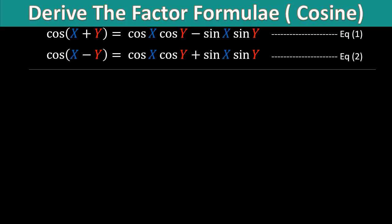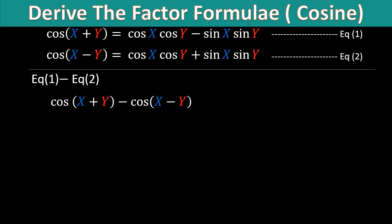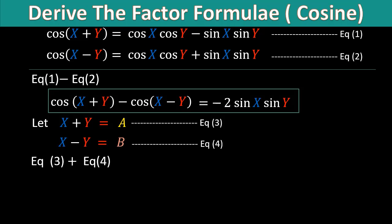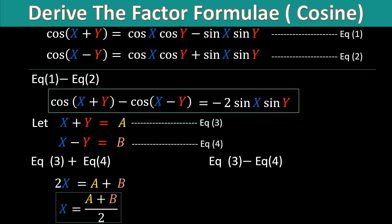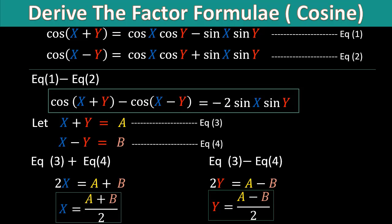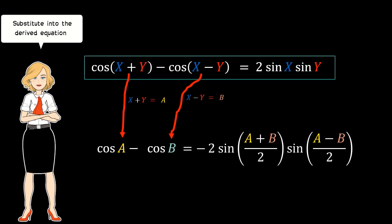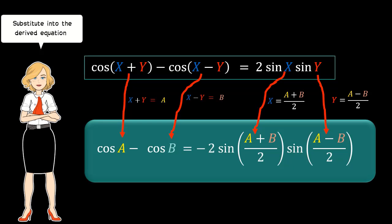We proceed to our last Factor Formula for cosine, using the same addition formulas. If we subtract equation 2 from equation 1, we have cosine of (x+y) minus cosine of (x−y) on the left-hand side, and minus 2 sine x multiplied by sine y on the right-hand side. We do the same substitution — x+y equals a, x−y equals b — and solve to get x equal to (a+b)/2 and y equal to (a−b)/2. We proceed with the substitution process into the derived formula, giving us our last Factor Formula for cosine.